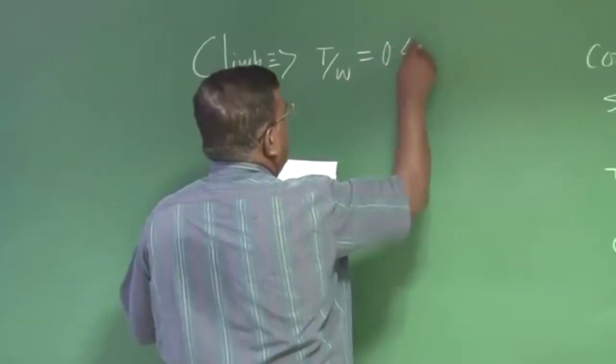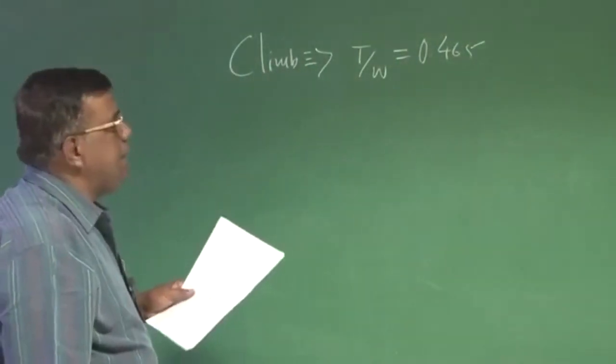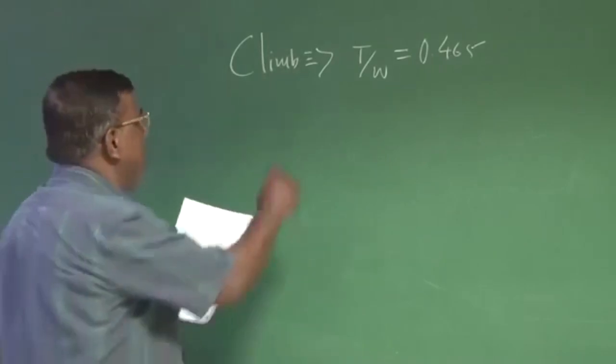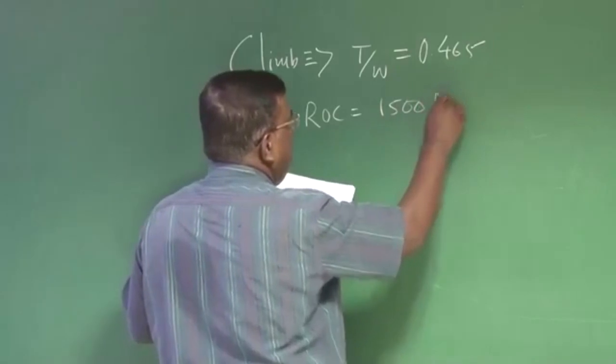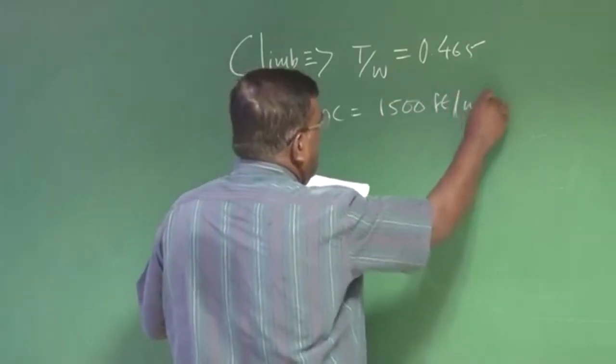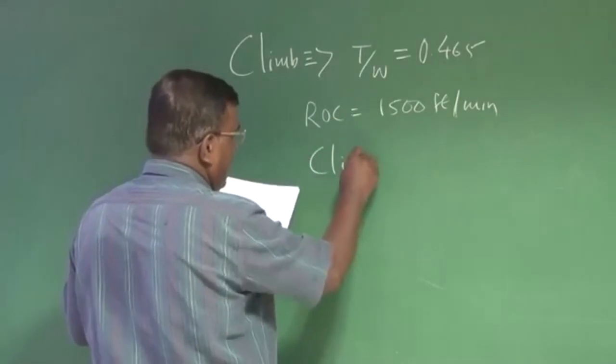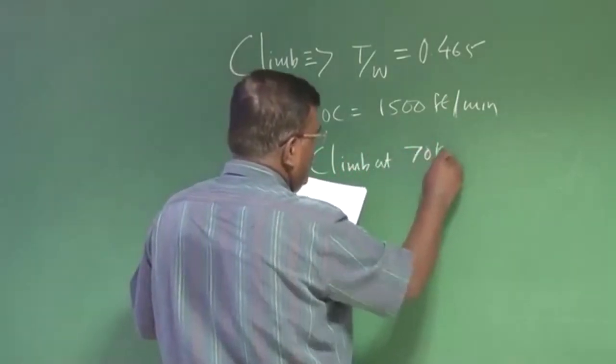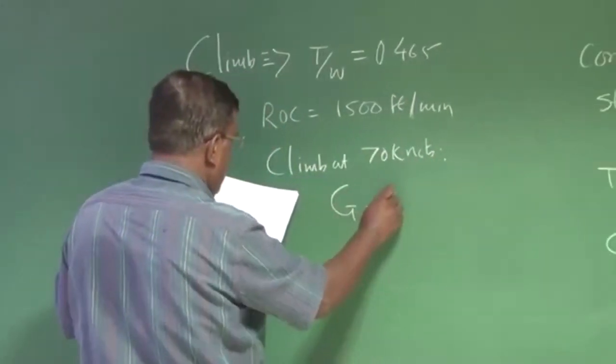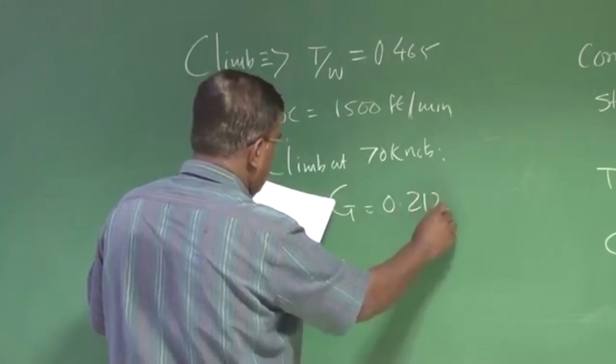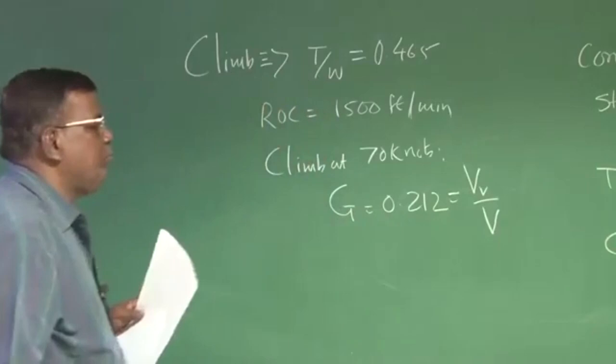Because as per the climb rate is concerned or rate of climb is concerned, which was 1500 feet per minute, and we plan to climb at 70 knots, which is 35 meter per second, we got G as 0.212, which was ratio of vertical velocity with the climb velocity, roughly. So now the question is...